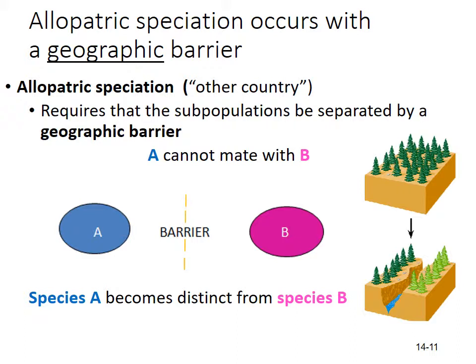Allopatric literally means 'other country,' so allopatric speciation occurs with a geographic barrier between population A and population B. With that barrier, they're no longer sharing genetic material or interbreeding, and species A becomes distinct from species B.